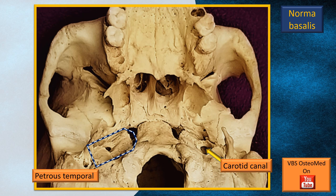That's the petrous part of the temporal bone, shown in the blue-white dotted line area — now it's flashing. It looks like a wedge-shaped piece of bone sandwiched between the sphenoid anteriorly and the occipital bone posteriorly. You can also see a yellow arrow indicating somewhere in the middle of the petrous part the carotid canal opening, the inferior opening of the carotid canal.